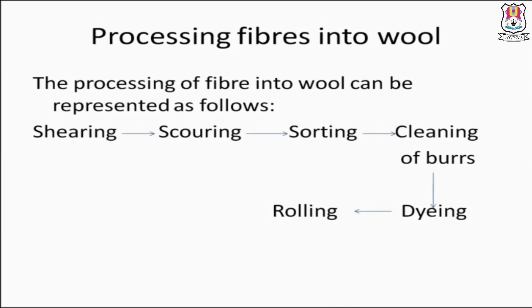Processing fibers into wool can be represented in six steps: first is shearing, second is scouring, third is sorting, fourth is cleaning of burrs, fifth is dyeing, and last is rolling.